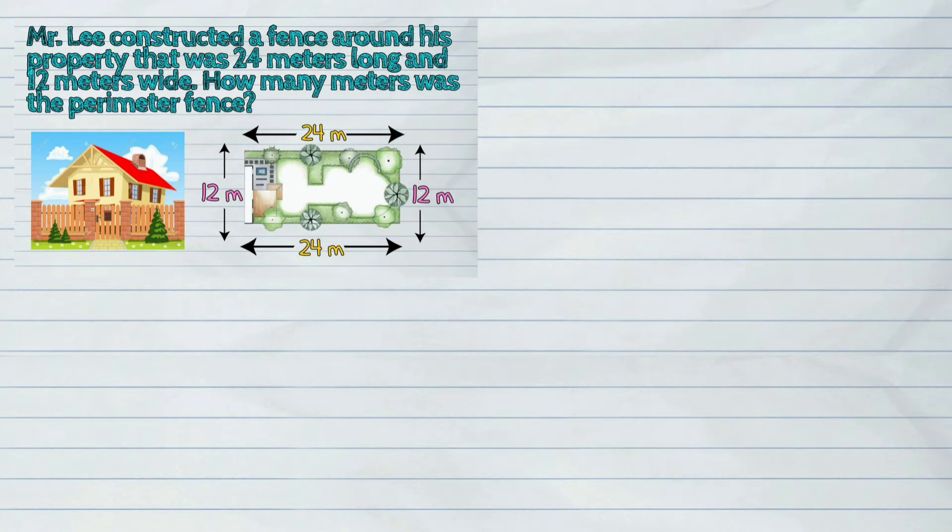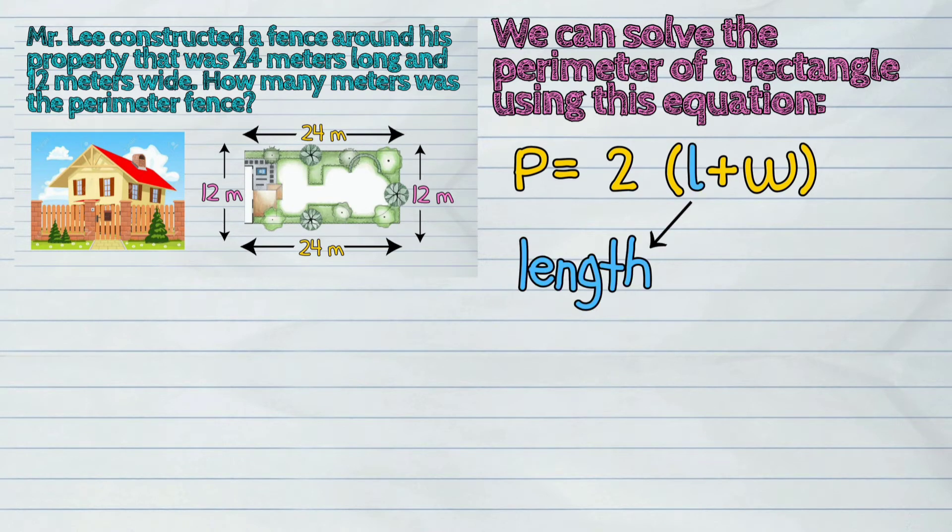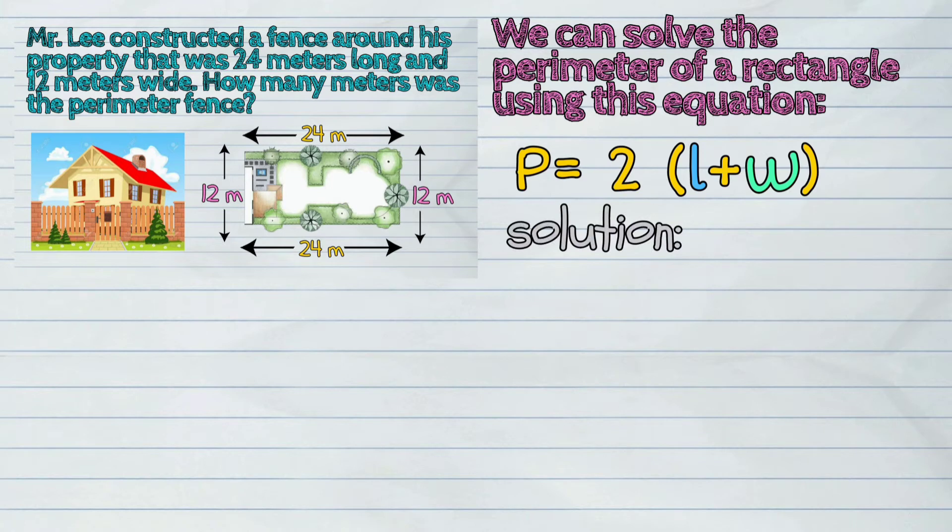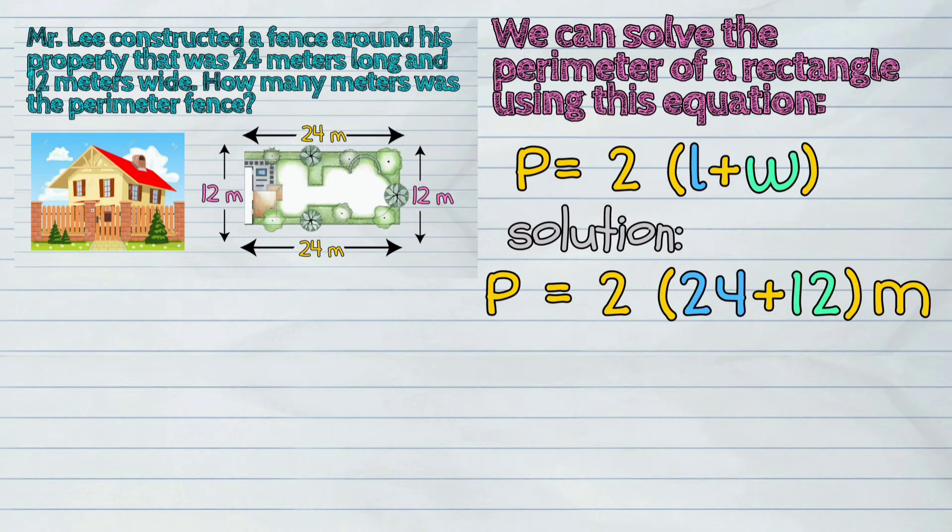We can solve the perimeter of a rectangle using this equation: P = 2(L + W), where L is the length and W is the width. Our solution is: Perimeter = 2(24 + 12) meters.